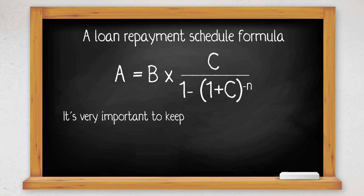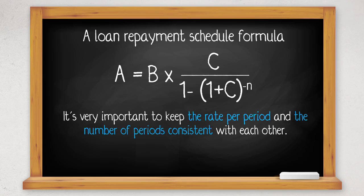It's very important to keep the rate per period and the number of periods consistent with each other. If the loan payments are made monthly, then the rate per period needs to be adjusted to the monthly rate by dividing by 12, and the number of periods would be the number of months on the loan.